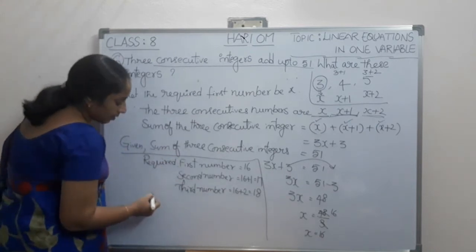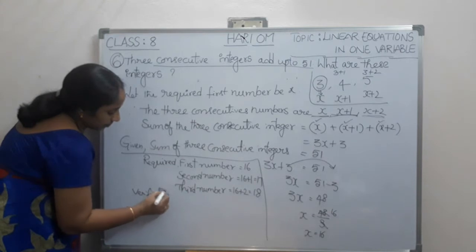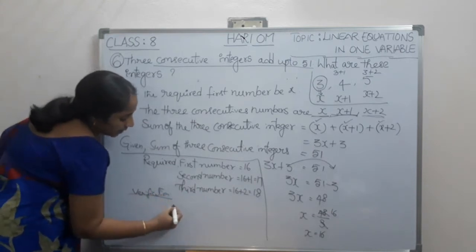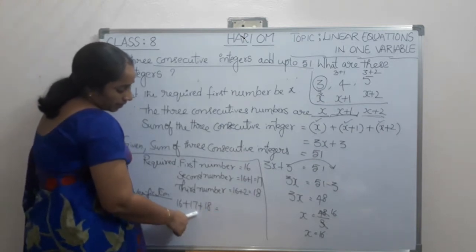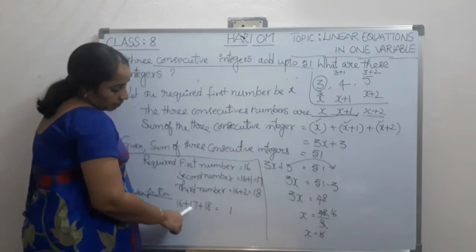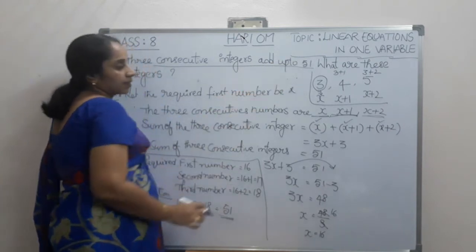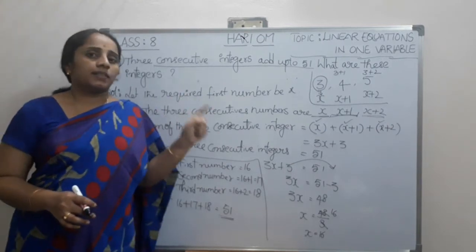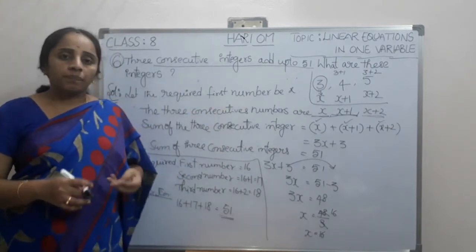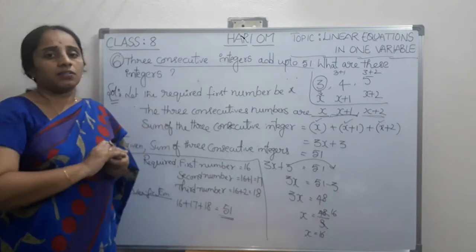For verification: 16 plus 17 plus 18. 6 plus 7 is 13, plus 8 is 21; carry 2, 1 plus 1 plus 1 plus 2 equals 5. So the sum is 51, which matches what was given. Note that you can also take the three numbers as x minus 1, x, x plus 1.